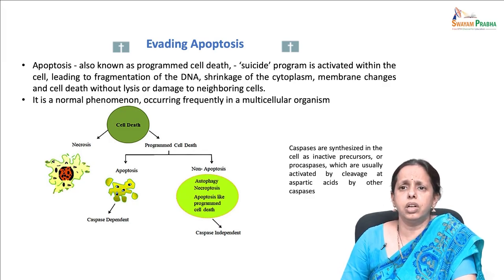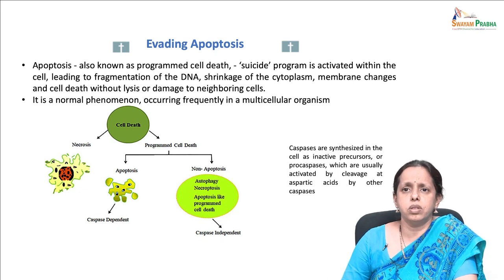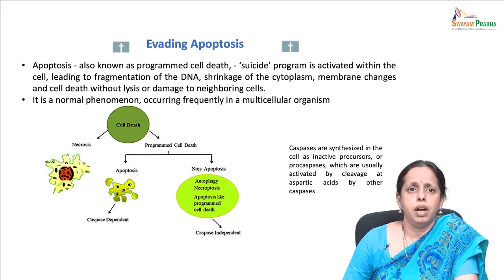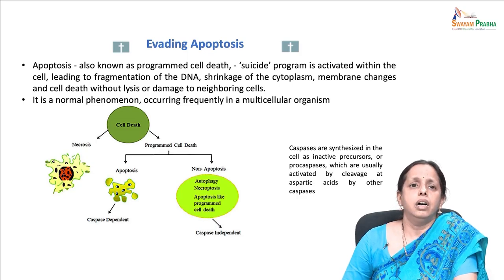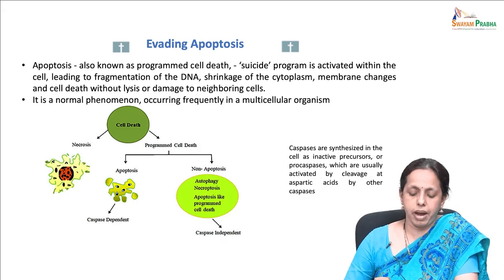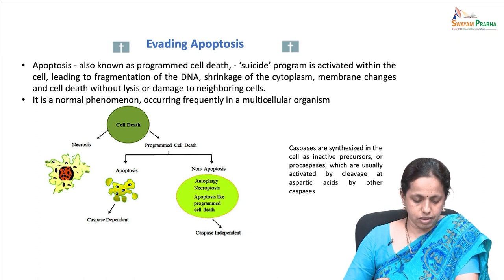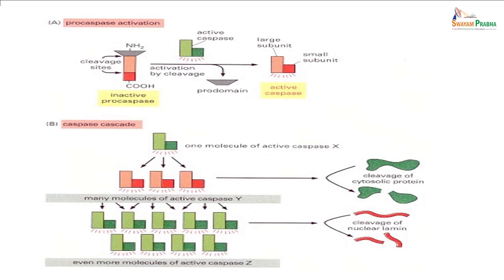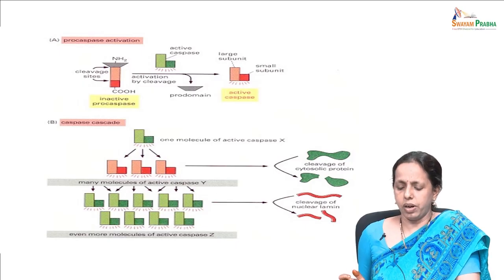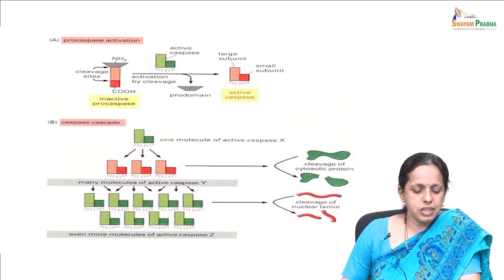Unlike programmed cell death (apoptosis), which happens from intrinsic and extrinsic signals, necrosis mostly occurs from signals outside the cell — mostly associated with inflammatory responses due to the release of heat shock proteins, uric acid, or DNA, which cause inflammasome activation and secretion of pro-inflammatory cytokines such as IL-1 beta. Cancer cell death usually involves two broad types: apoptosis and necrosis. Non-apoptosis types include autophagy, necroptosis, and caspase-independent programmed cell death.